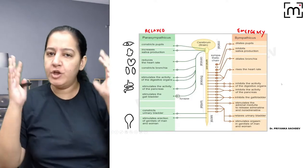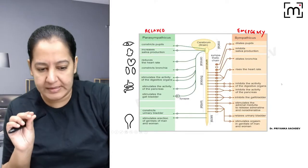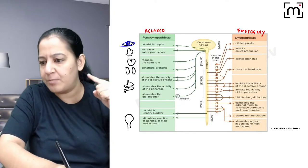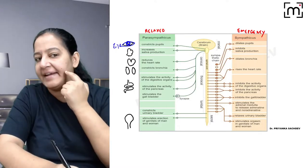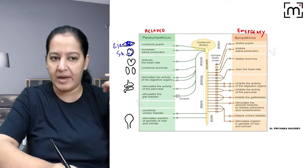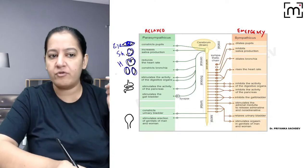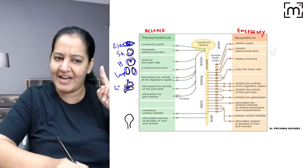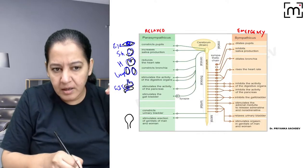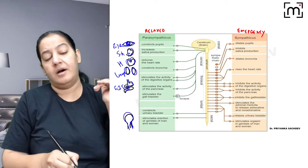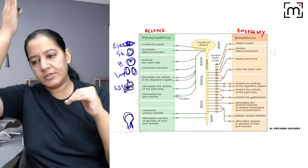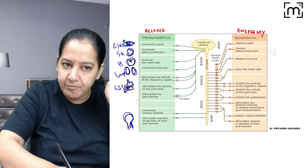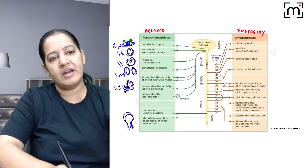Now let's talk about the actions of each system on organs. In the human body from head to toe, every organ has both parasympathetic receptors (muscarinic M and nicotinic N) and sympathetic receptors (alpha and beta). Parasympathetic receptors are M and N — muscarinic and nicotinic. Sympathetic receptors are alpha (alpha-1, alpha-2) and beta (beta-1, beta-2). Muscarinic also has subtypes M1, M2, M3. All organs have both types of receptors.